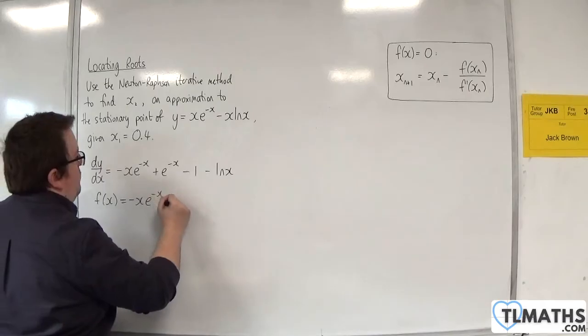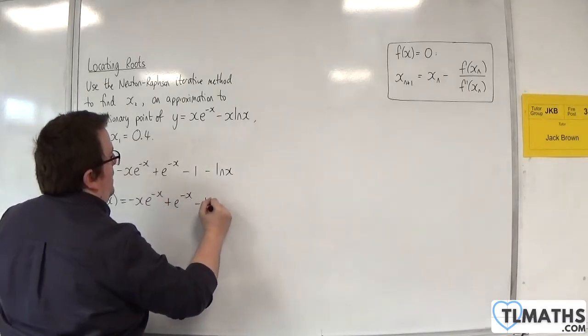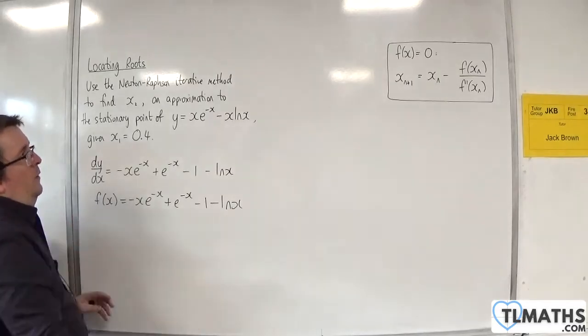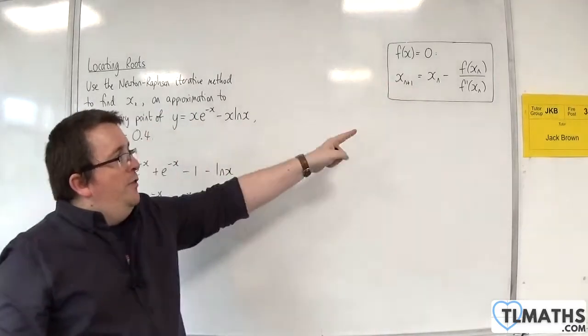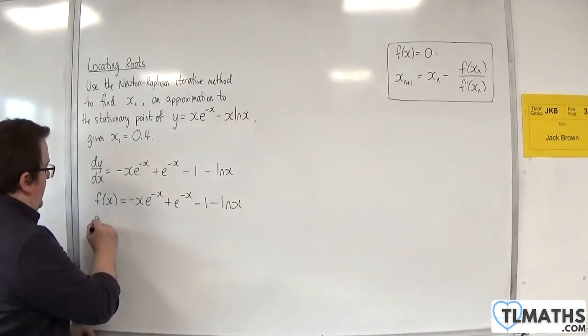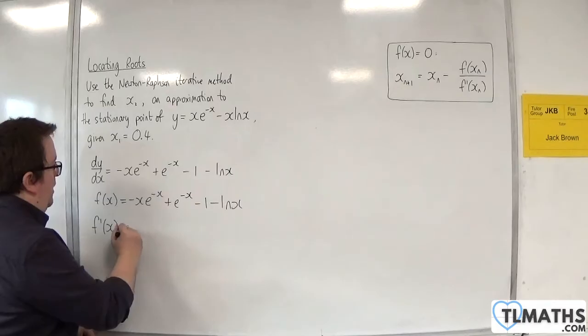And stationary points will exist when this is equal to 0. So that is what I want to use. But the formula has f prime in it. So I'm going to need f prime of x as well.